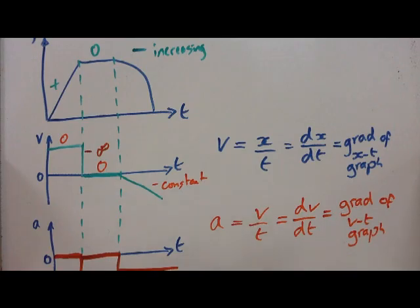Okay, so that's how you draw velocity-time and acceleration-time graphs from a displacement-time graph. It's all about the gradient.